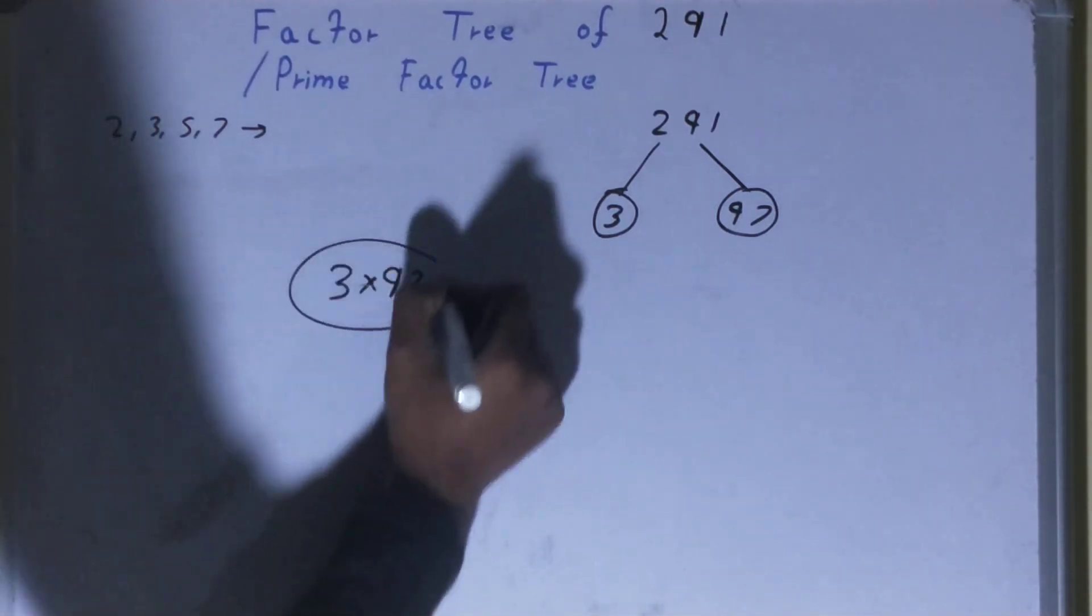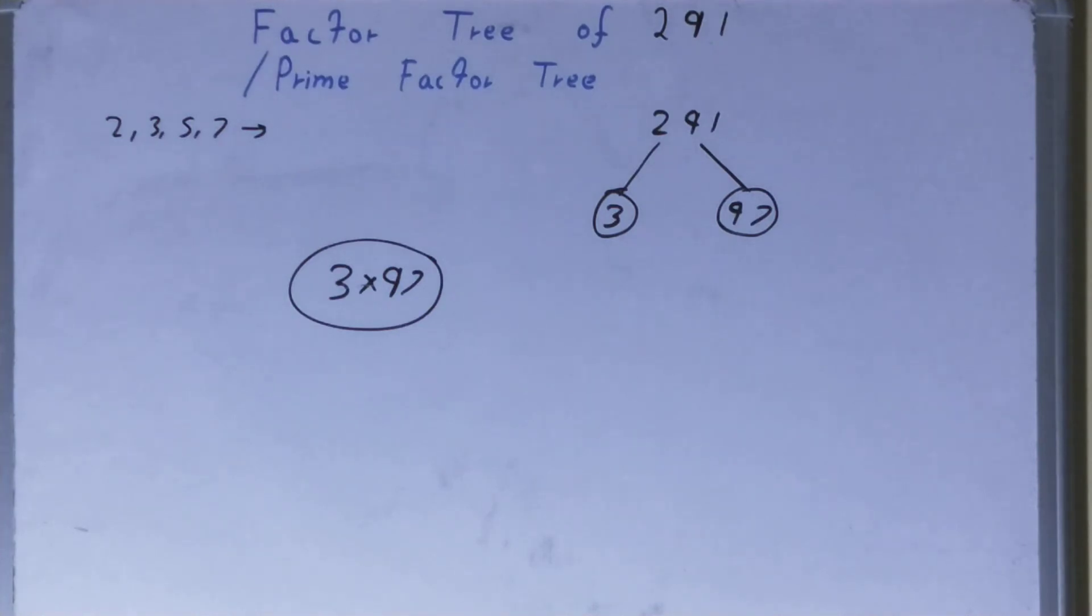in the form of prime factors like this. And that's it, that's all about the factor tree of the number 291. So if you found the video helpful, please hit the like button, do consider subscribing, and thanks for watching.